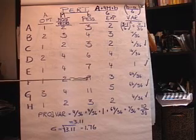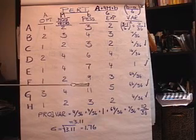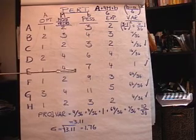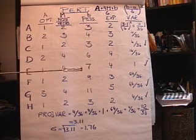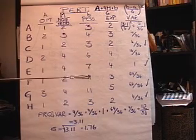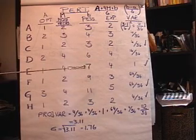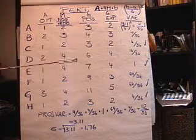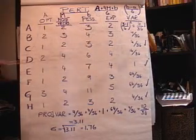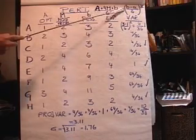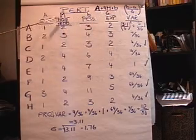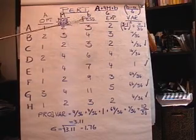The next thing we'd like to do then is calculate some probabilities. Say we're interested in the probability of completing this project within sixteen days. We know the expected time is fifteen, but let's say that we need to really get this done within sixteen days. What's the probability? Well what we can do is calculate the variance for each activity. The variance formula up here is B minus A divided by six squared. So it's the pessimistic minus the optimistic over six squared.